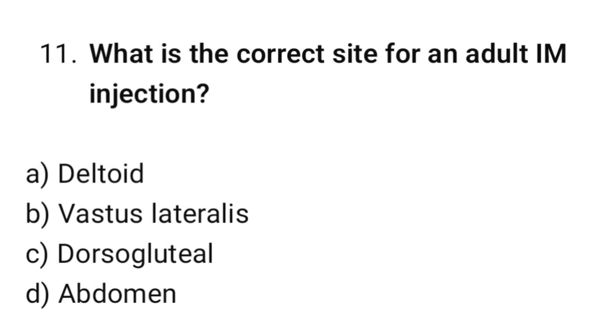Question number eleven: What is the correct site for an adult IM injection? The correct option is B, vastus lateralis.